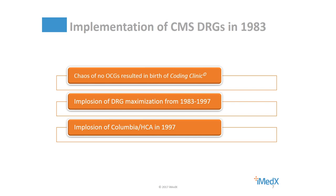That's also when the official coding guidelines started to be written. Then from 1983 to 1997, we saw physician DRG consultants come out of the woodwork, generally taking home as much as $50,000 a week for DRG reviews performed on a 50% contingency fee schedule. And all that came to a screeching halt 20 years ago with the implosion of the 450 Columbia HCA hospital chain coding fiasco, resulting in an $875 million fine paid to the OIG for fraudulent coding.